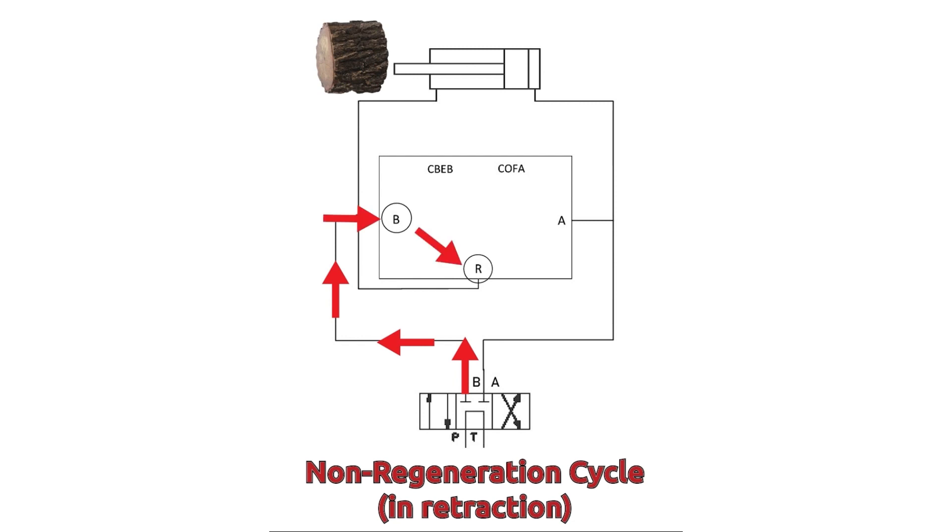The pressure then moved to the R-port. Pressure goes out of the R-port and toward the rod end of the log splitter, causing the rod to retract. Pressure is then routed to the tank.